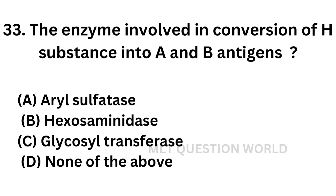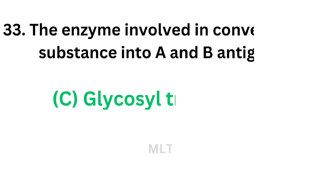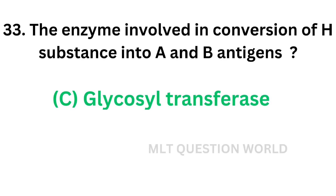Question No. 33. The enzyme involved in conversion of H-substance to A and B antigens. Option A: Aryl sulfatase. Option B: Hexosaminidase. Option C: Glucosyltransferase. Option D: None of the above. H-substance is the precursor of A and B antigen, and the enzyme which converts H-substance to A and B antigen is glycosyltransferase.